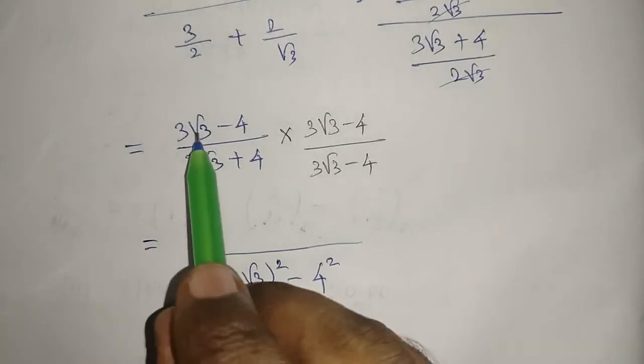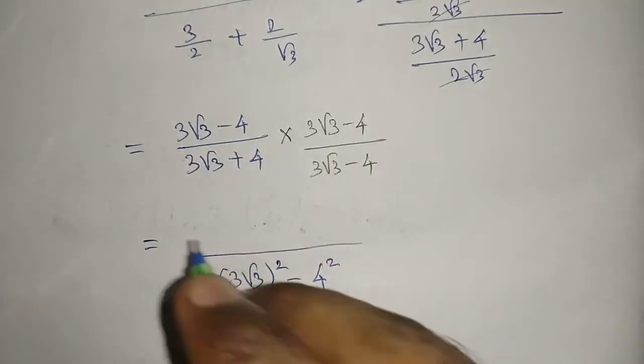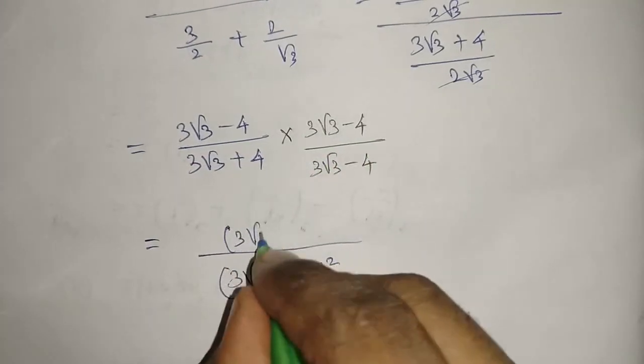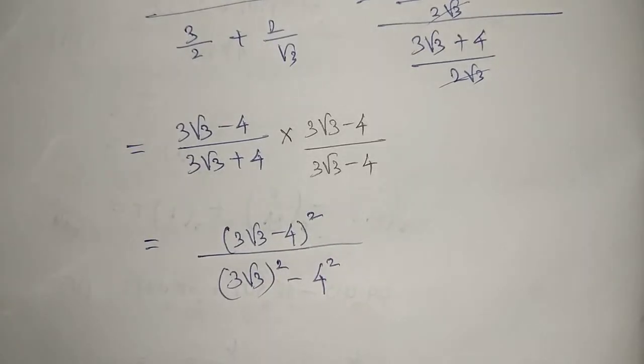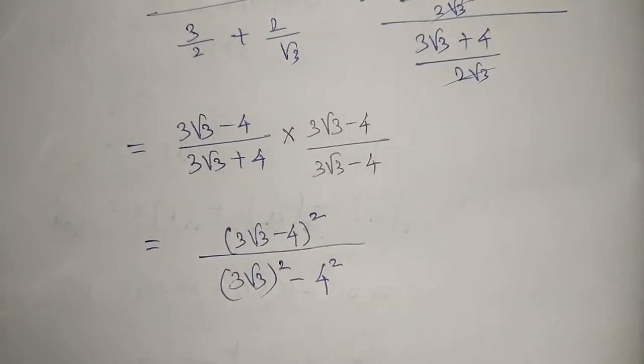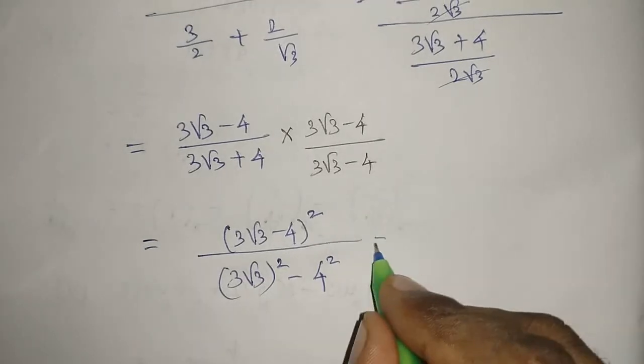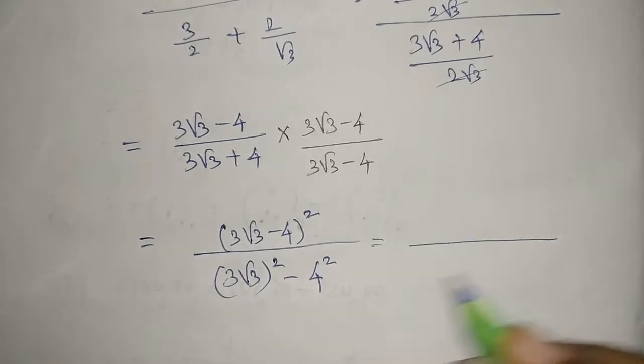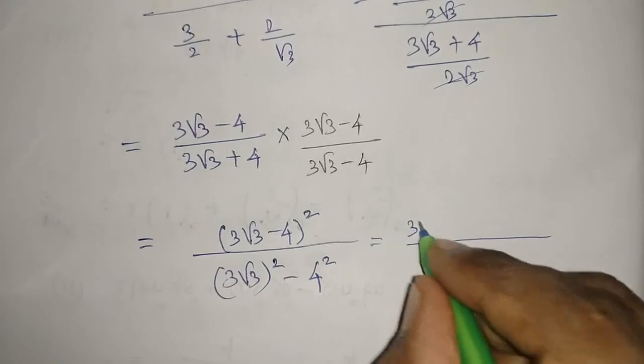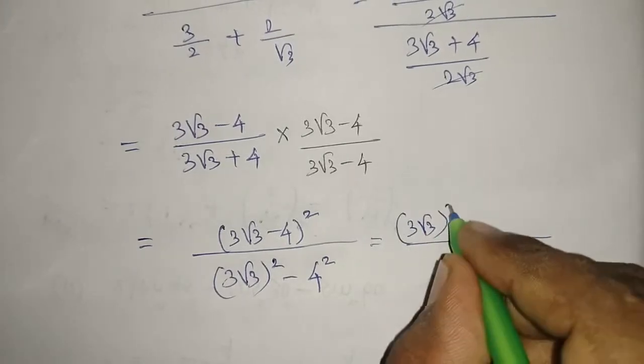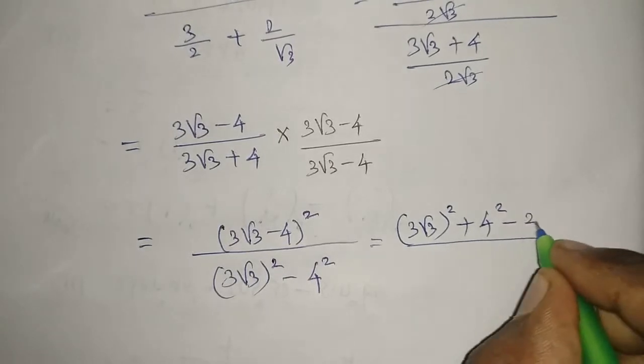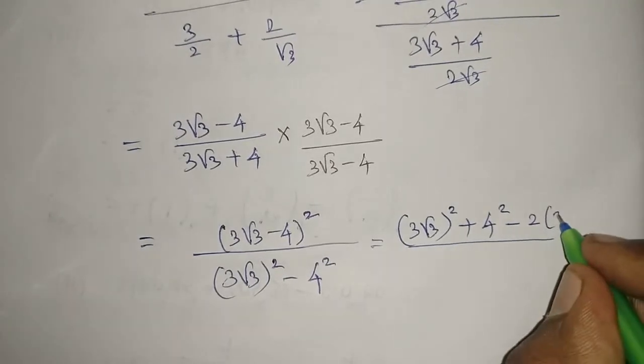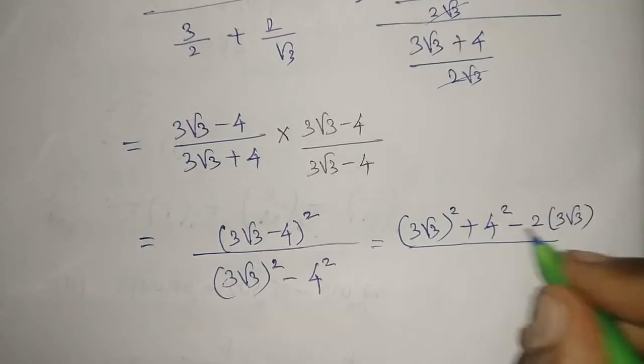Now (a - b)² means (3√3 - 4)². Using the formula a² + b² - 2ab, where a is 3√3 and b is 4.